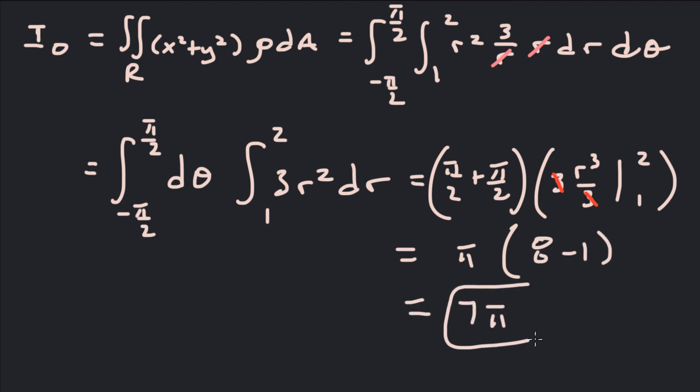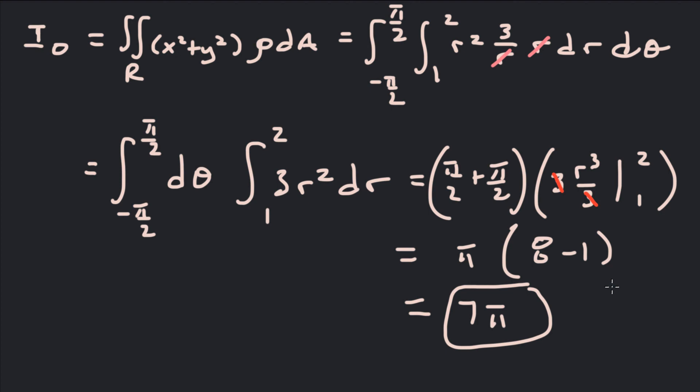The moment of inertia about the origin, 7π, is larger than the moment of inertia about the x-axis, 7π/2. So it's more difficult to get this lamina to spin around the origin than around the x-axis. There's no symmetry in the lamina about the origin, although there is symmetry in the density function — the lamina doesn't extend around to the other side. That's moments of inertia.